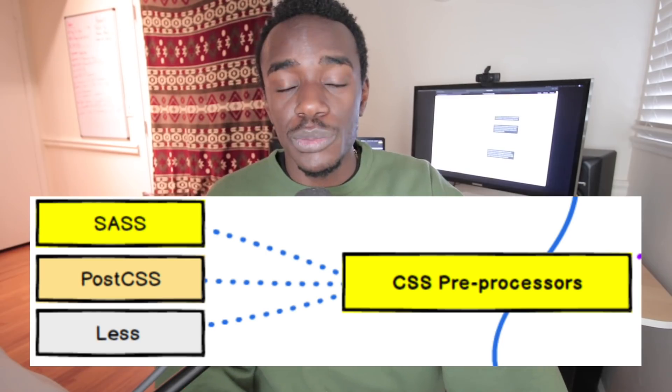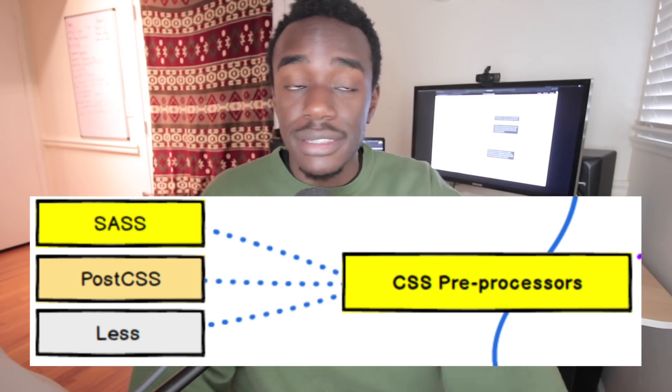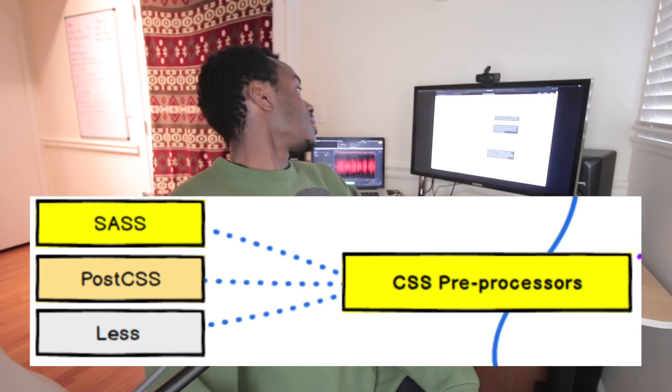Then you have CSS preprocessors — Less, Sass, PostCSS. The whole point of a preprocessor is to make your life easier versus just writing in a normal CSS file. They help you write less and get more.